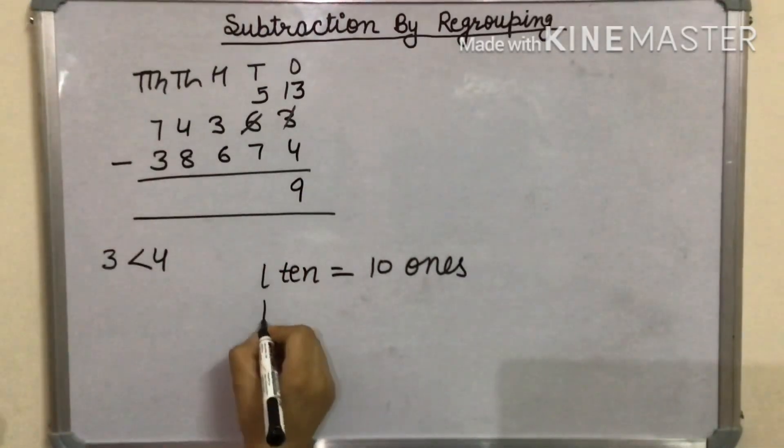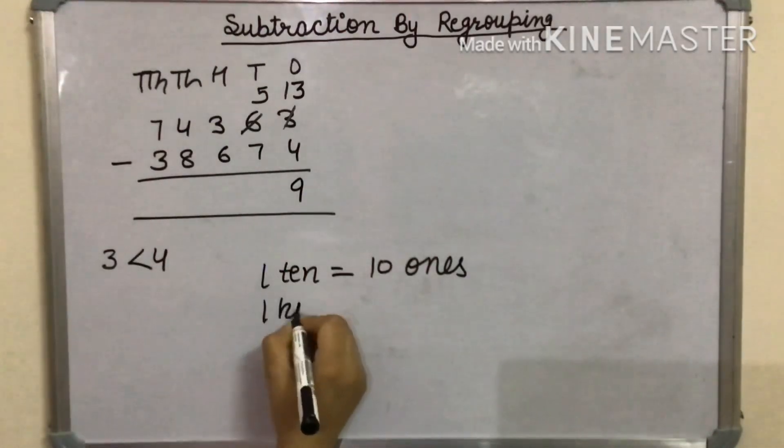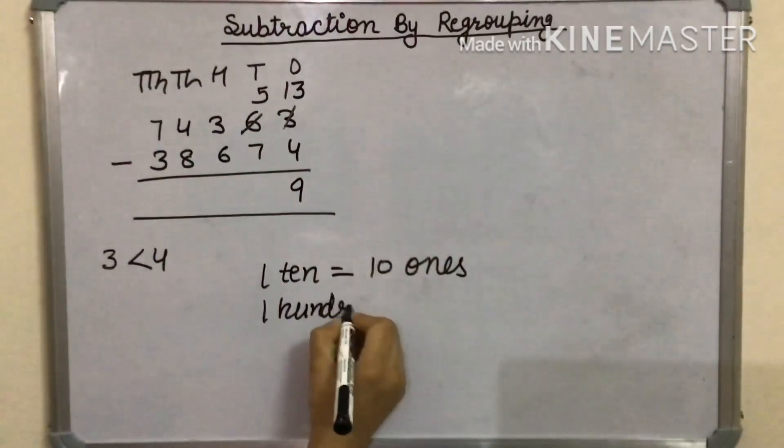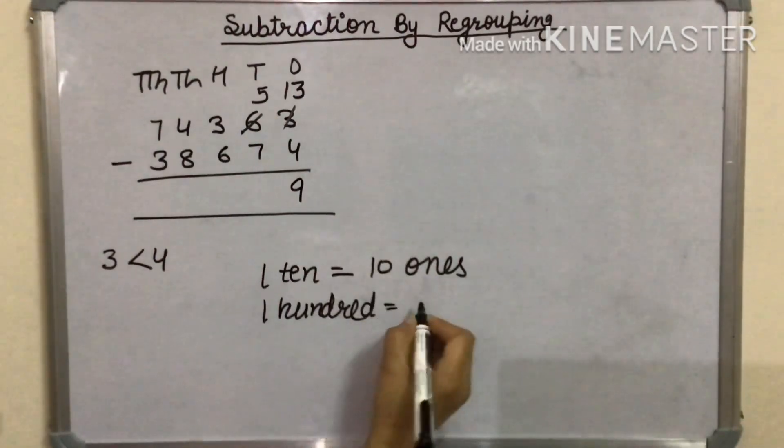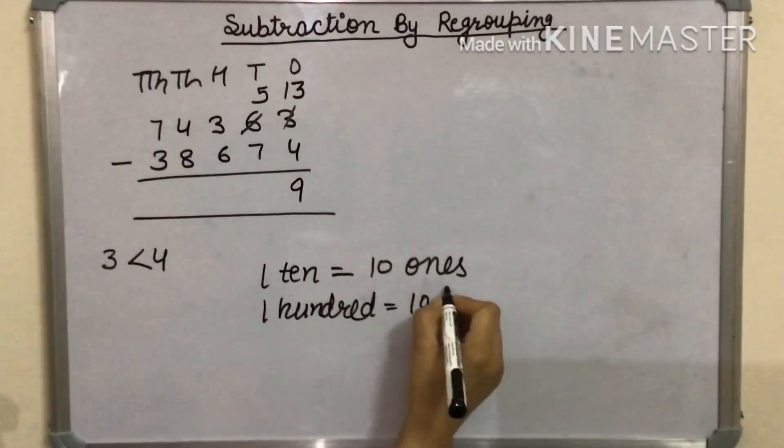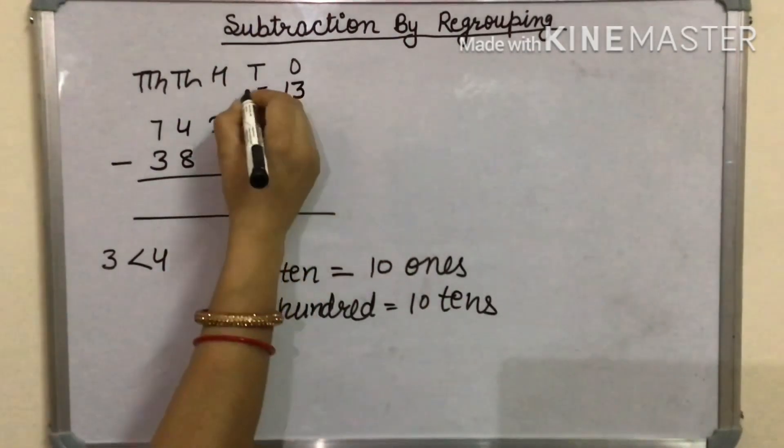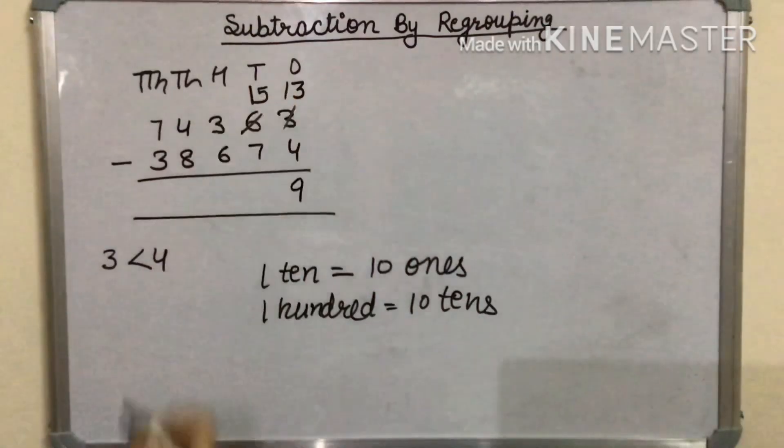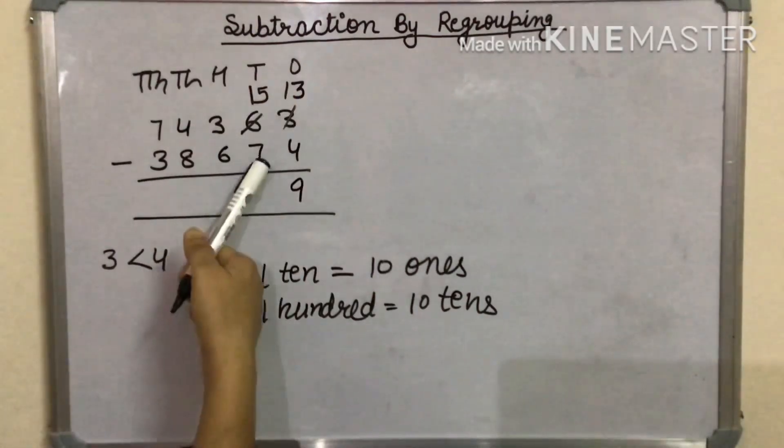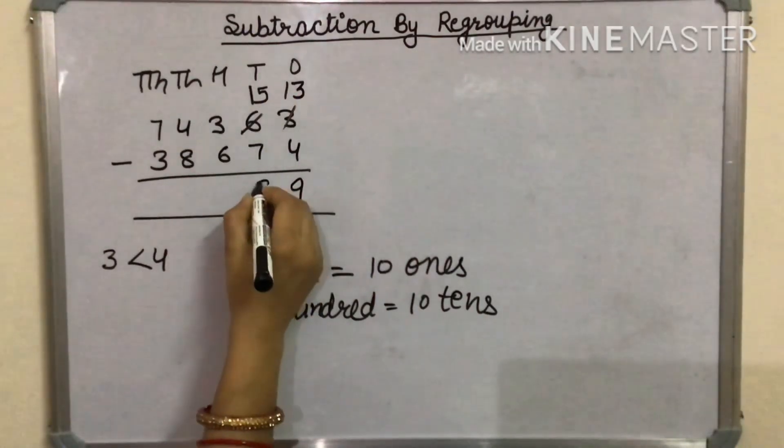Now, we will borrow 100 and 100 is equal to 10 tens. Now, the 10s digit will be 15 and we will subtract 7 from 15. The answer will be 8.